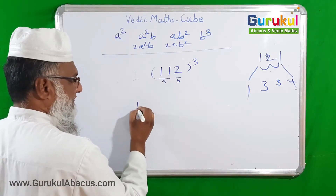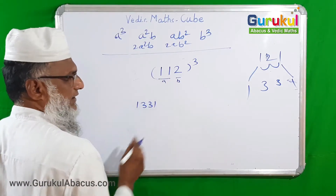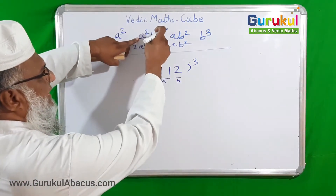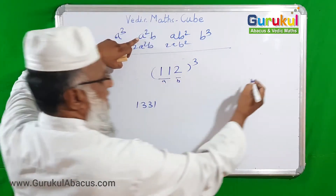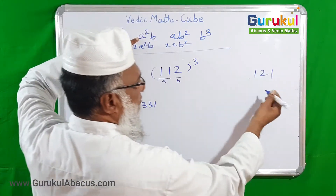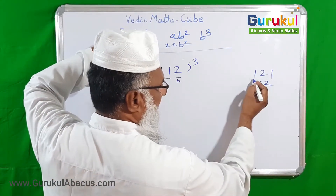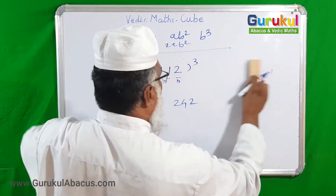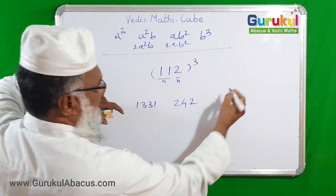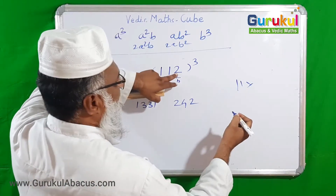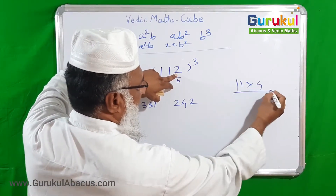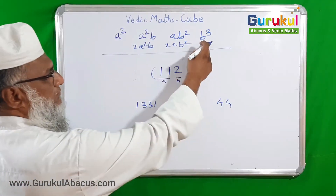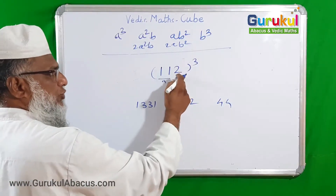Now A squared times B: 11 squared is 121, multiplied by B which is 2, gives 242. Then A times B squared: 11 into B squared — B squared is 4, so 11 times 4 is 44.